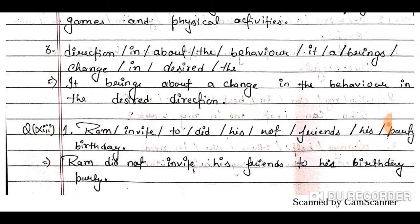Question number 13, number one: Ram / invite / to / did / his / not / friends / his / party / birthday. The subject is 'Ram'. It is a negative sentence, so Ram did not — and since it is simple past, V1 is used. The answer is: Ram did not invite his friends to his birthday party.